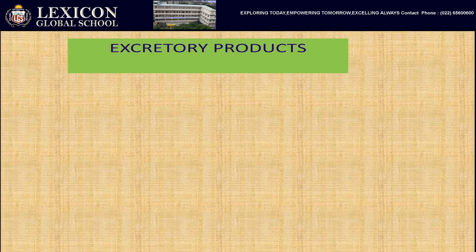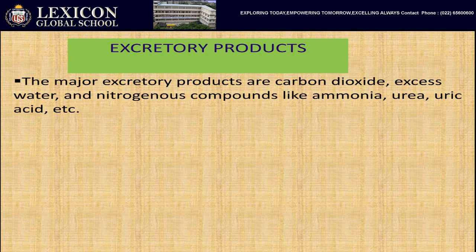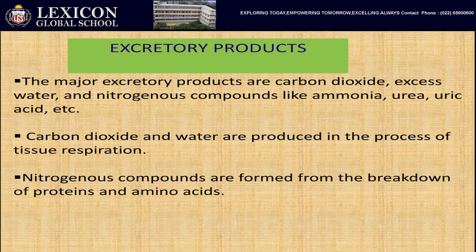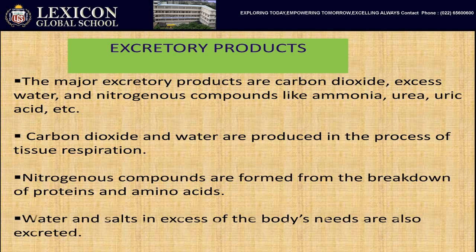What are excretory products? The major excretory products are carbon dioxide, excess water, and nitrogenous compounds like ammonia, urea, and uric acid. Carbon dioxide and water are produced in the process of tissue respiration. Nitrogenous compounds are formed from the breakdown of proteins and amino acids. Water and salt in excess of body needs are also excreted.